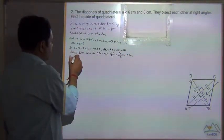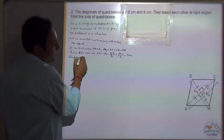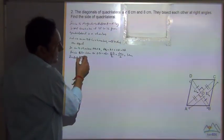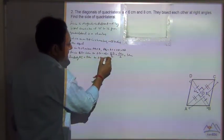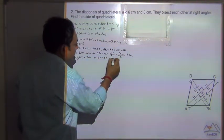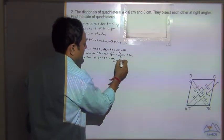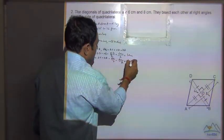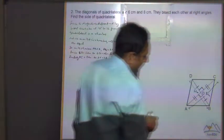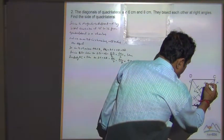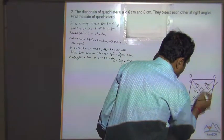And similarly, AC is equal to 8cm. So OC is equal to OA is equal to AC divided by 2, which is 8cm divided by 2, which is equal to 4cm.